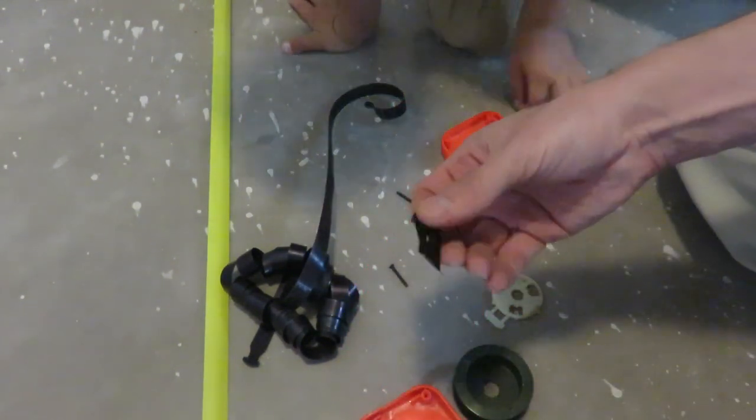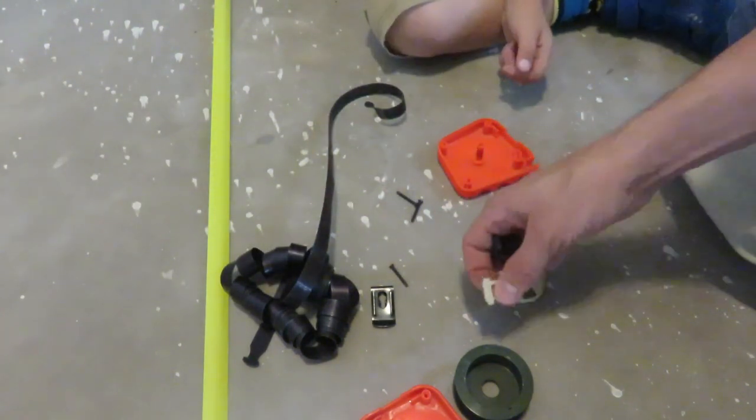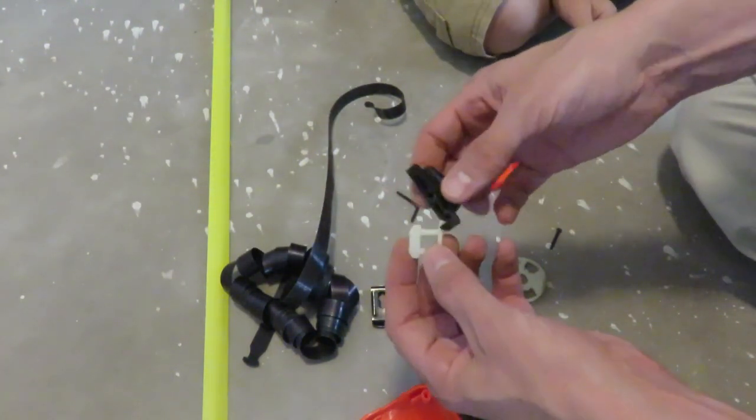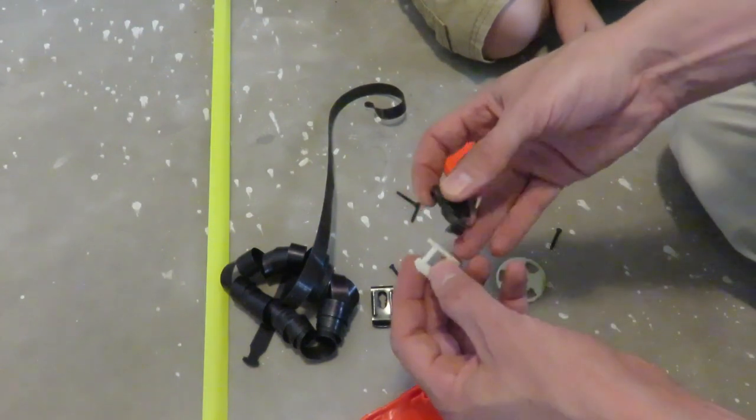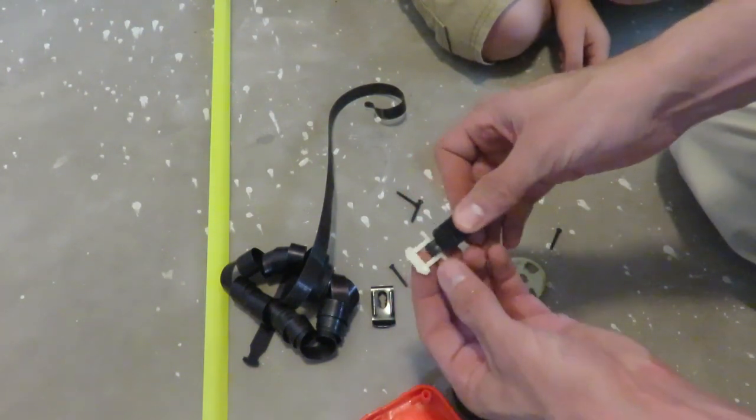A clip. And this thing. This is the, what do you call this? A brake. So it keeps it from coiling back in.